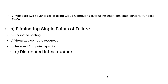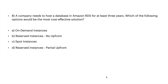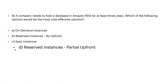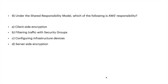A company needs to host a database in Amazon RDS for at least three years. Which option will be the most cost-effective solution? A: on-demand instance, B: reserved instance no upfront, C: spot instance, or D: reserved instance partial upfront. Since they need to host for at least three years, the most cost-effective solution is D: reserved instance partial upfront.